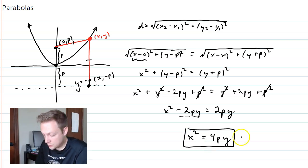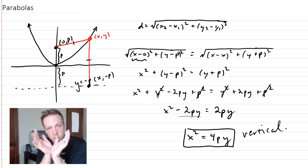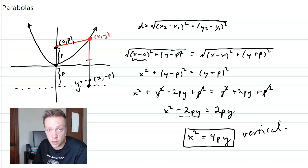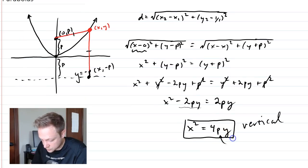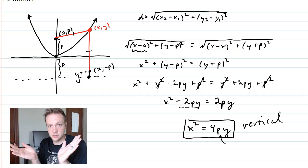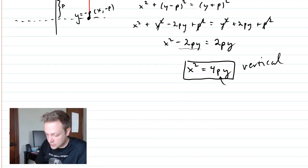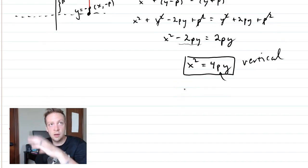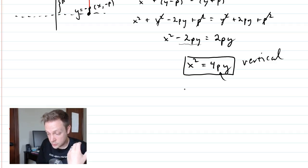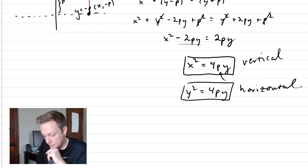Our final equation is x² = 4py — this is for a vertical parabola. Whenever you see a parabola opening up or down, you'll use x² = 4py. The value of p determines the focus: larger p means it's further from the center, making a wider parabola; negative p flips it so the focus is below the vertex. For a horizontal parabola opening to the right or left, the equation is y² = 4px.